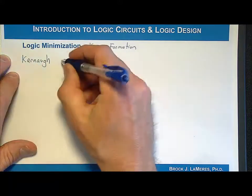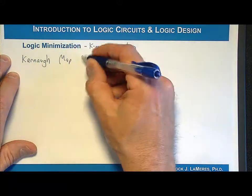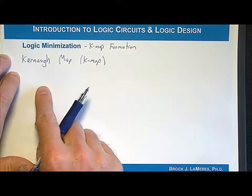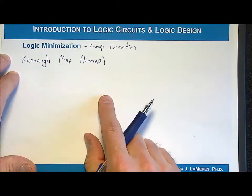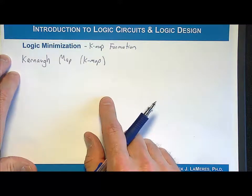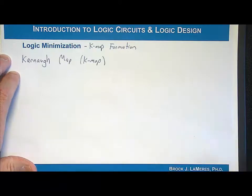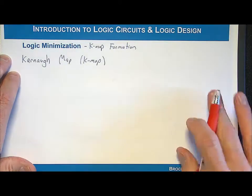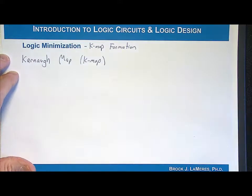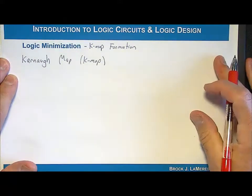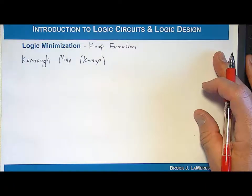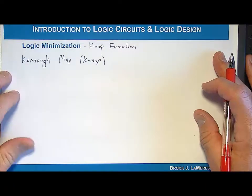A Karnaugh map, or K-map, is simply a graphical way to take a truth table and put it into a grid form so that you can easily identify which variables can be removed from the canonical form. It's simply performing the same distributive, complements, and identity theorem process in order to remove variables, but it's something we can do by hand graphically. Once we learn the algorithm, it becomes straightforward to implement using a computer system.